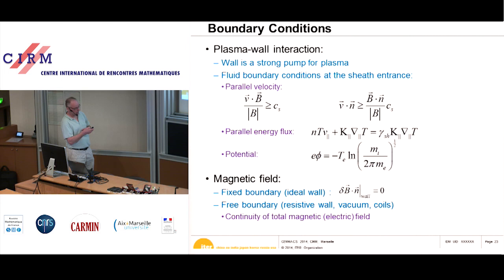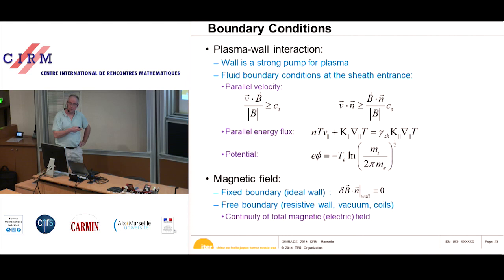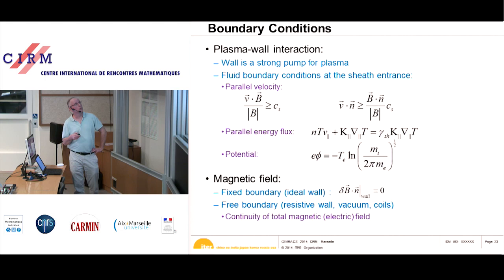The boundary conditions are more complicated in a tokamak. There is an interaction of the plasma with the wall — the plasma touches the wall somewhere, creating a sheath. The sheath develops because electrons, having higher velocity, are lost more easily to the wall. The resulting boundary conditions are that the parallel velocity driving into the wall must equal or exceed the sound speed, and there is also a condition on the total energy flux parallel to the magnetic field.